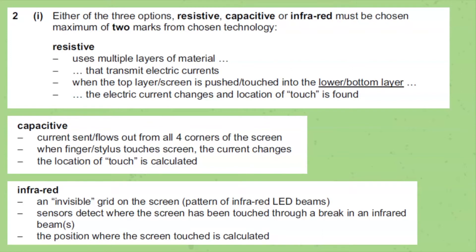First let's see Capacitive. In a capacitive touch screen technology, current flows out from all four corners, and when a finger touches the screen, the current changes and the location of touch is calculated. Just understand the concept: current and voltage change. The voltage change determines the touch position and you can frame the rest of the sentence. You get two marks for the description.